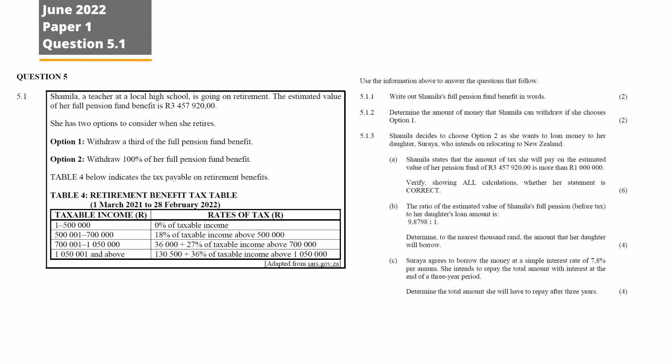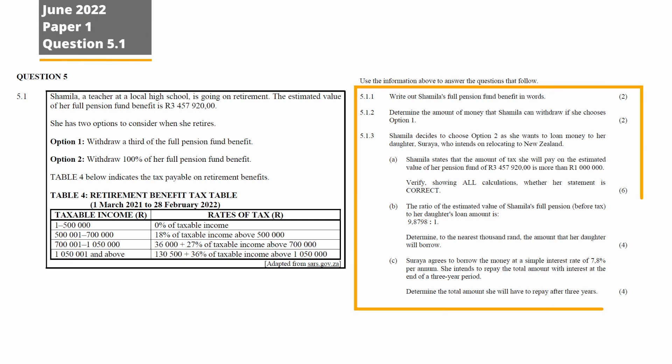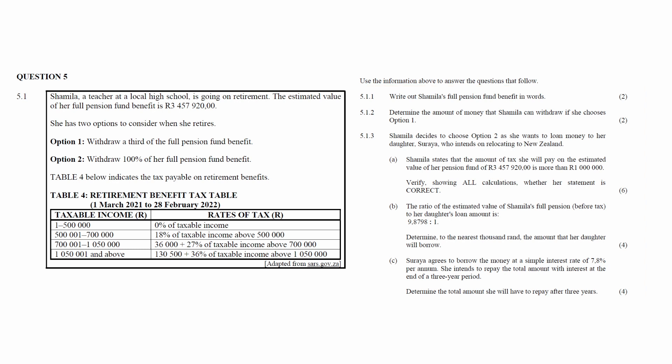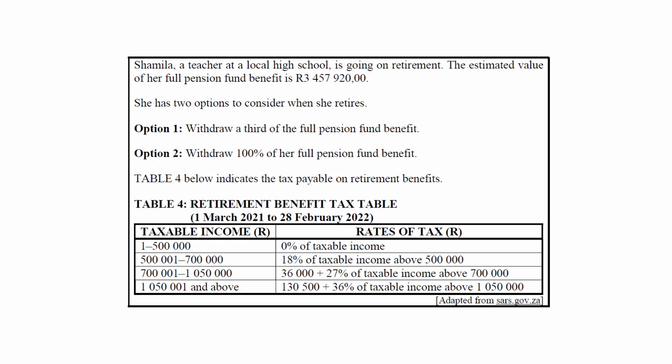Question 5.1 consists of five finance questions designed to assess your understanding of income tax and simple interest calculations. You are given a situation where a person is going on retirement and the estimated value of a full pension fund benefit is R3,457,920.